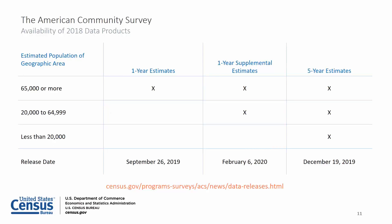ACS data products are released about one year after the data are collected. The first year of full sample data collection was 2005. The upcoming 2018 ACS data products will be released on a modified staggered schedule. ACS one-year estimates collected in 2018 are planned to be released on September 26, 2019, with some remaining tables coming out on October 17, 2019. ACS one-year estimates are available for geographic areas with a population of 65,000 or more. One-year supplemental estimates are available for geographic areas with populations of 20,000 or more, and are planned to be released on February 6, 2020.